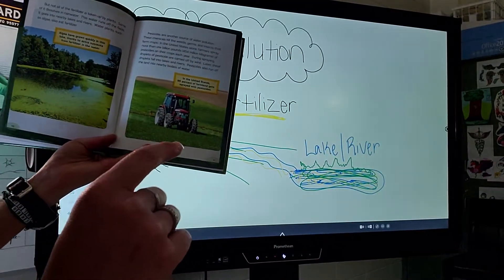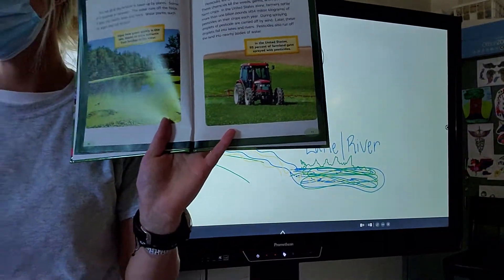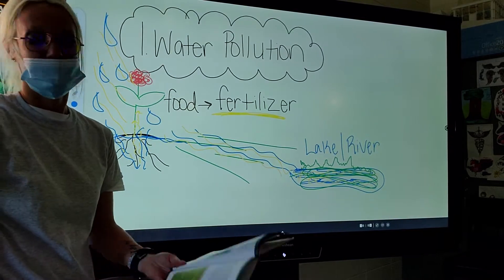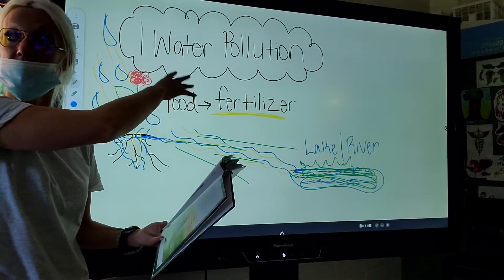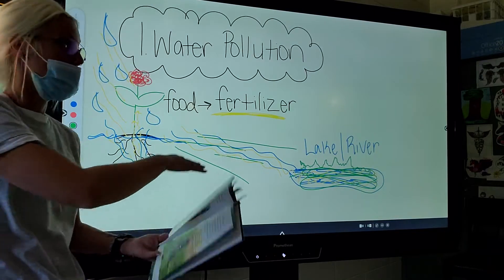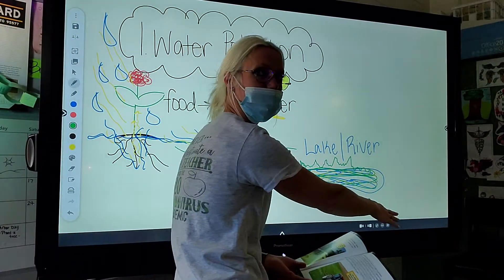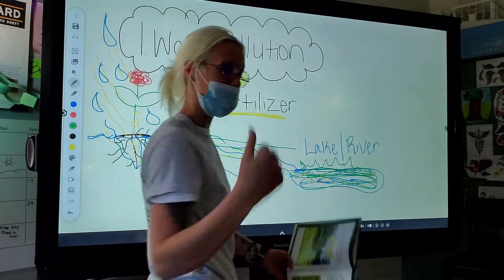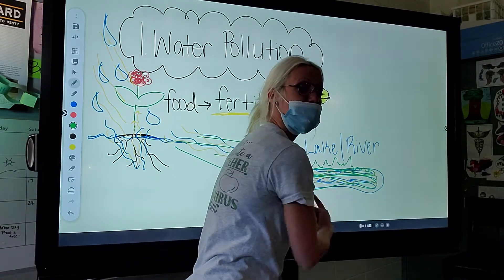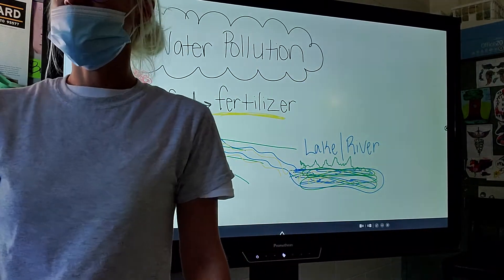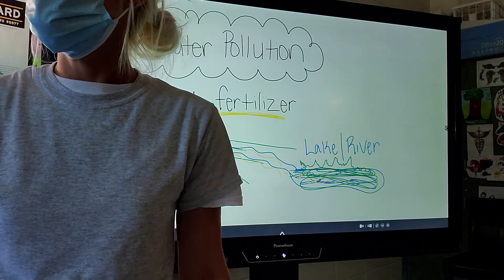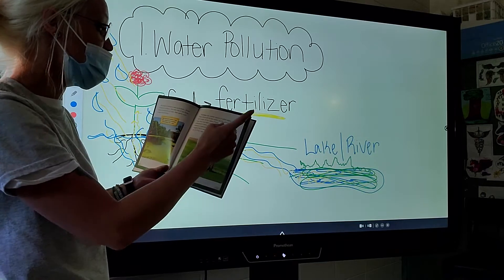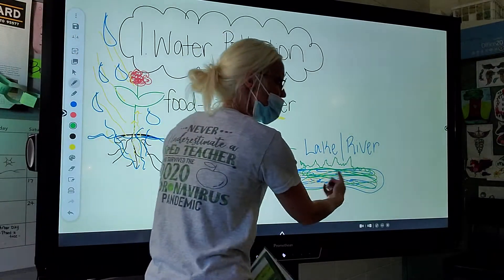So pretend this is a corn field. It rains. The chemicals that were sprayed on the plant get washed off — where is it going to go? Into a lake or river. What is this going to do to the fish in the river? It's going to be bad for them. The chemicals that kill weeds and insects are not going to be good for fish.